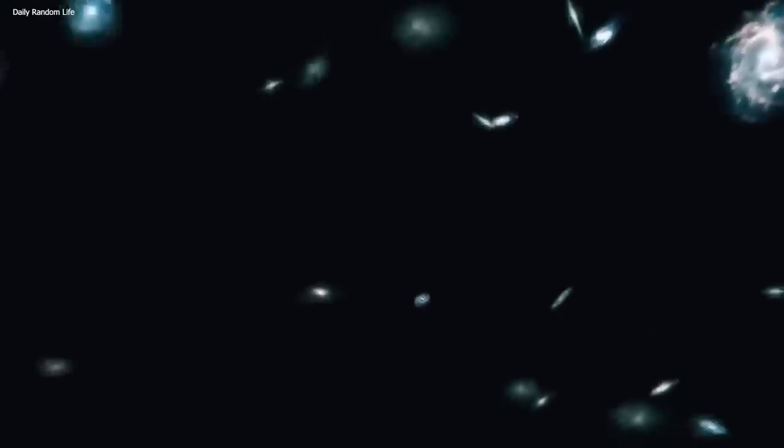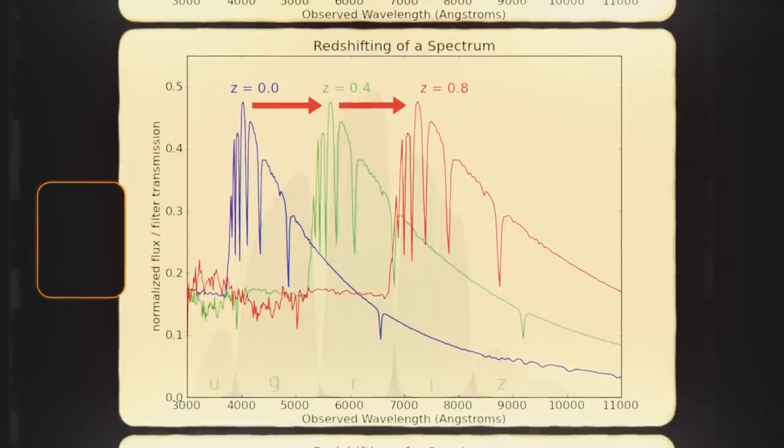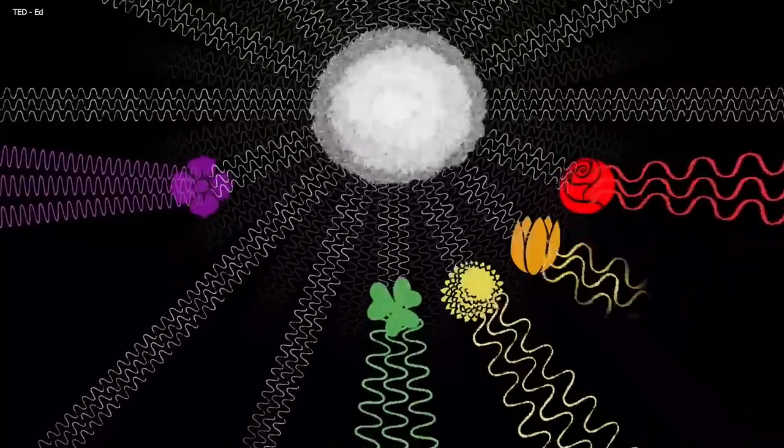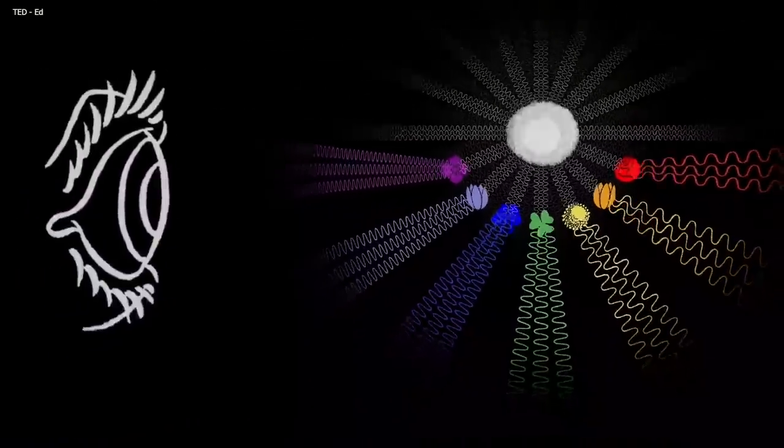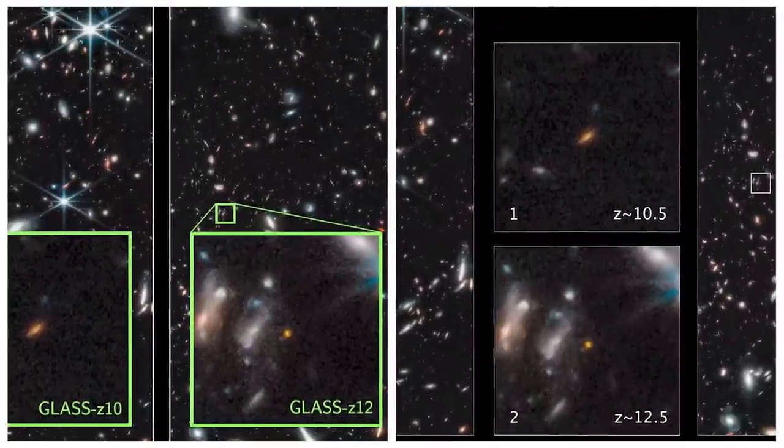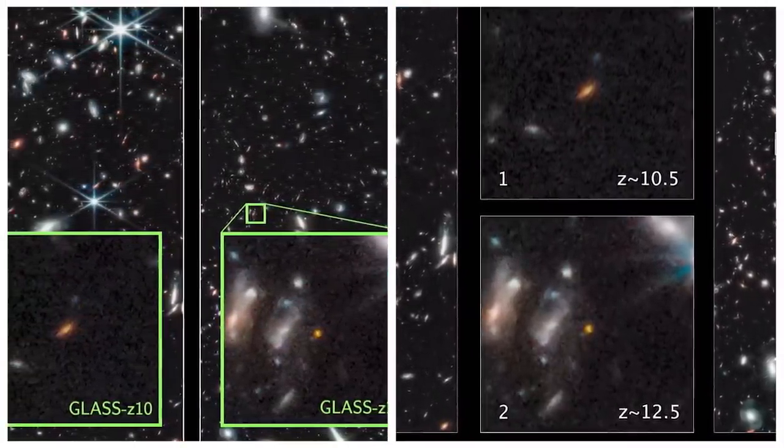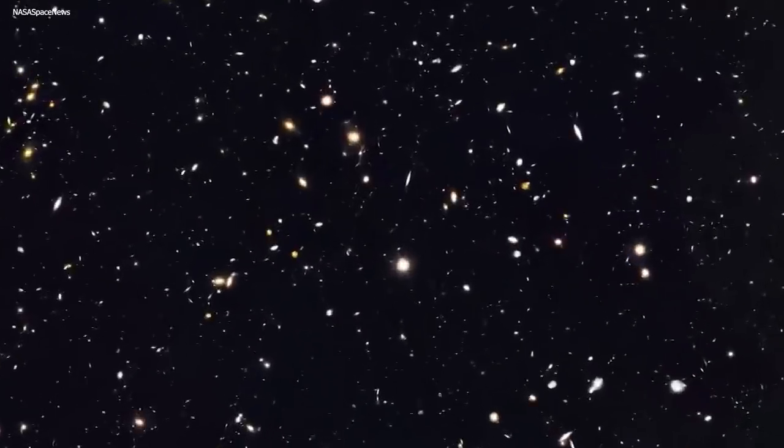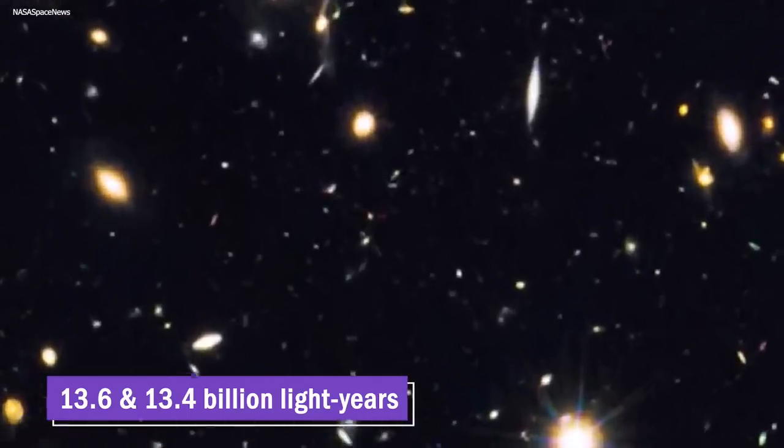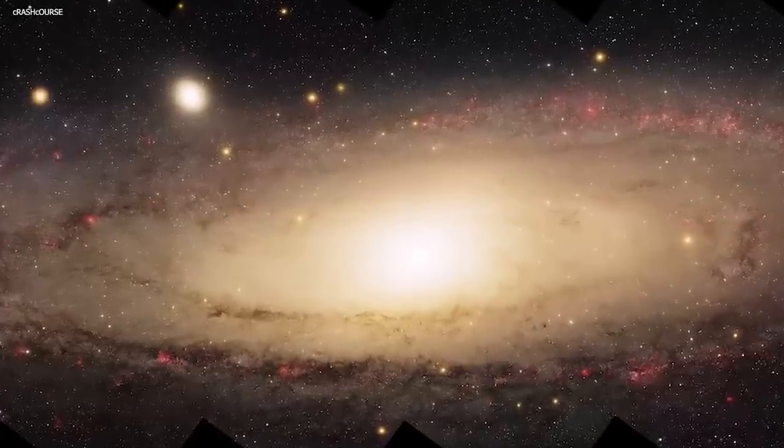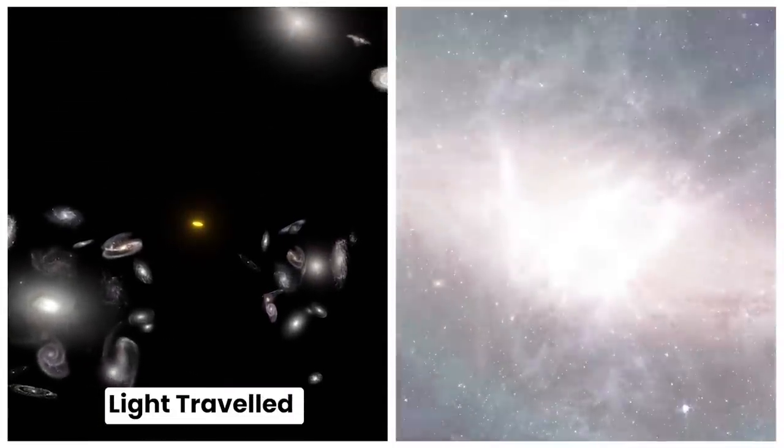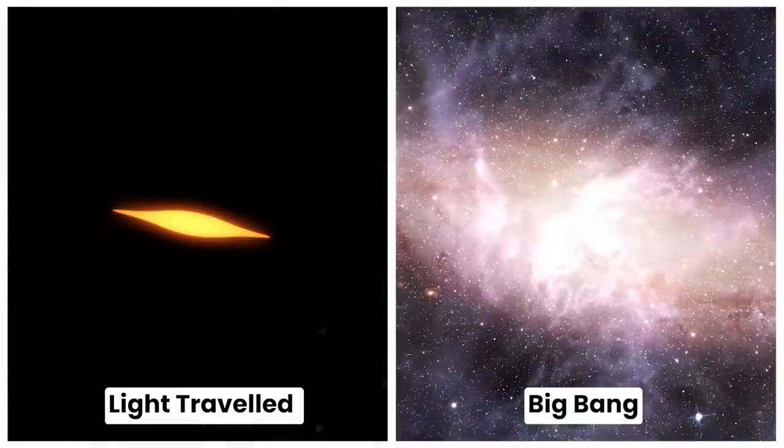To figure out just how far away these galaxies were, astronomers estimated something called their photometric redshifts, which is a bit of a complicated term that basically refers to an estimation of how far away something is based on its color. It turned out that the estimated redshifts for Glass Z-12 and Glass Z-10 were about 12.4 and 10.5 respectively. Now, these numbers might not mean much to us, but in astronomy speak, they translate into distances of approximately 13.6 and 13.4 billion light years. In other words, when we look at these galaxies, we're looking at light that has traveled for about 350 and 450 million years after the Big Bang. Mind-blowing, isn't it?